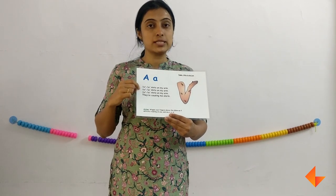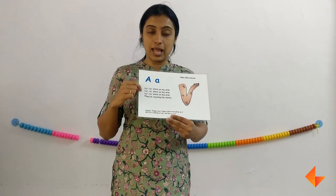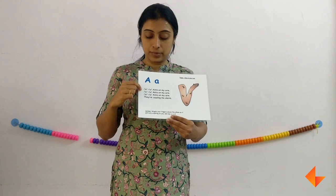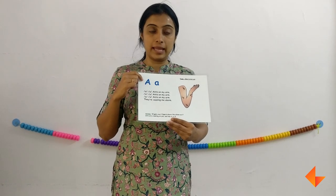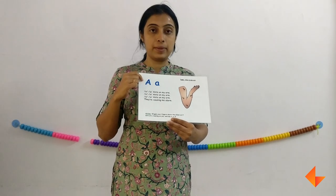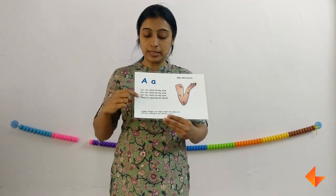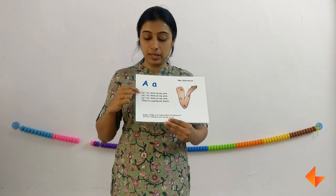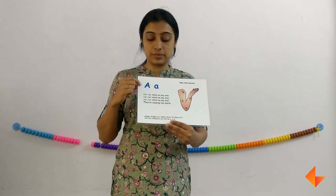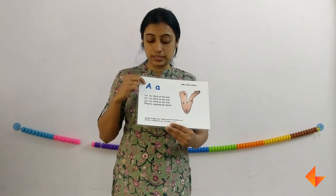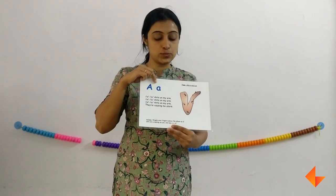Now ask your kids what is the sound that they hear often in the rhyme. They will say 'ah.' Which letter makes the sound 'ah'? A makes the sound 'ah.' So first the picture, then the rhyme, then the sound, and then comes the letter. Now you can discuss: this is capital A and this is small a.